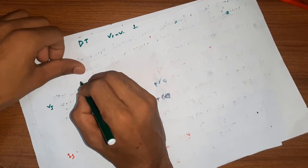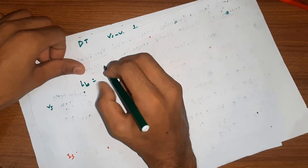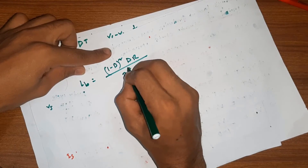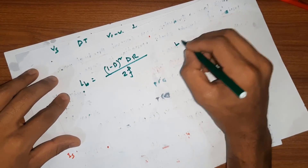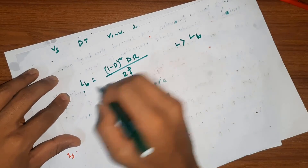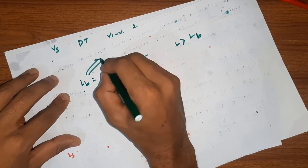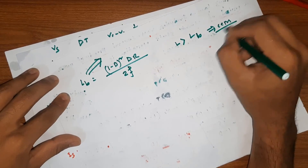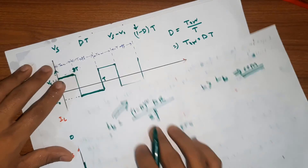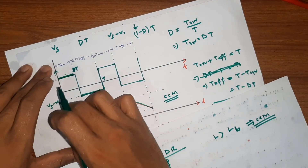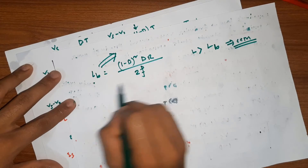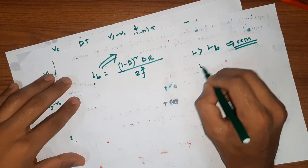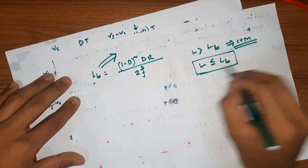The minimum inductance LB is equal to (1-D) times a calculated expression. If we evaluate LB at the boundary condition, we can determine the critical inductance value that separates CCM from DCM operation.